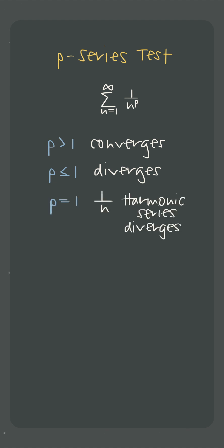When p is exactly 1, the series is specifically 1 over n, which we call the harmonic series. And that special series diverges because, as we already said, we'll have a divergent series when p is less than or equal to 1.